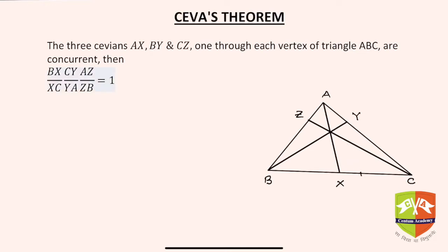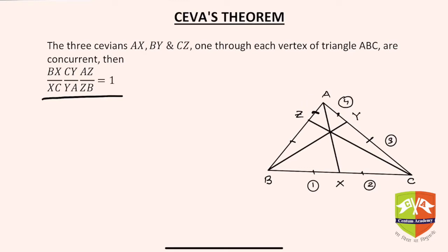Ceva's Theorem says that if three cevians AX, BY, and CZ, one through each vertex of a triangle ABC, are concurrent, then we get this relationship: BX/XC × CY/YA × AZ/ZB = 1. So the product of each ratio of the sides cut by the cevians in a cyclic manner gives you one.